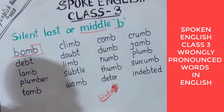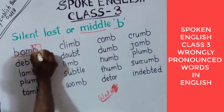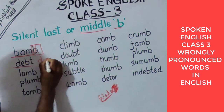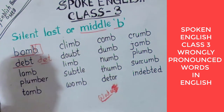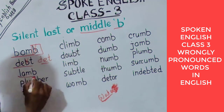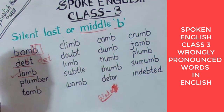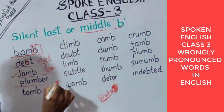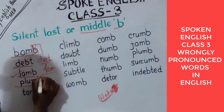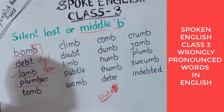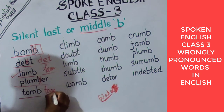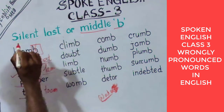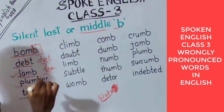The correct pronunciation is 'bomb,' not 'bom-b' — B is silent. Next, D-E-B-T: correct pronunciation is 'debt,' not 'deb-t.' Next, L-A-M-B: correct pronunciation is 'lam,' not 'lamb.' Next, P-L-U-M-B-E-R: the B is silent, so it's 'plumber.' And T-O-M-B: it's 'tomb,' not 'tom-b.' So: bomb, debt, lamb, plumber, and tomb.